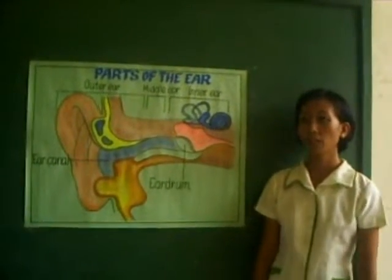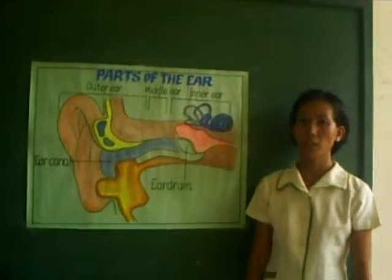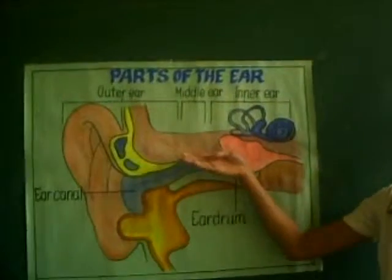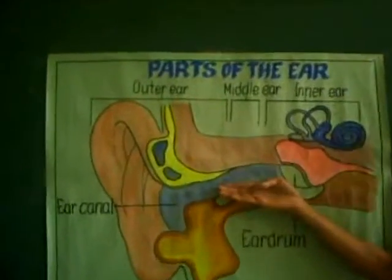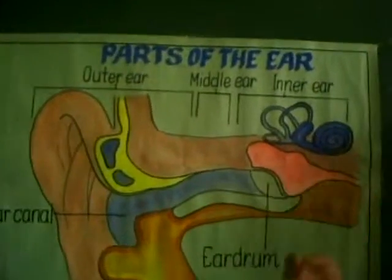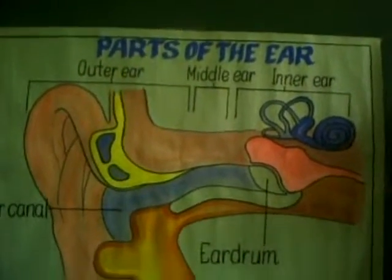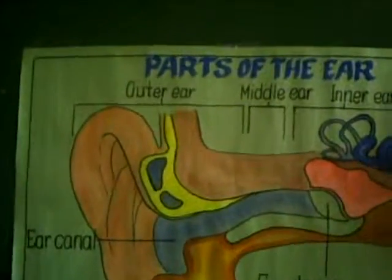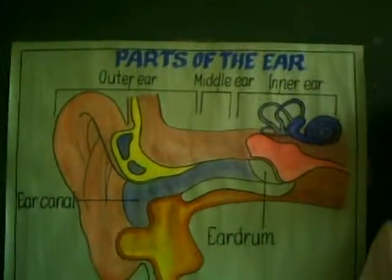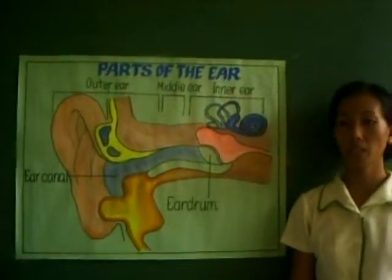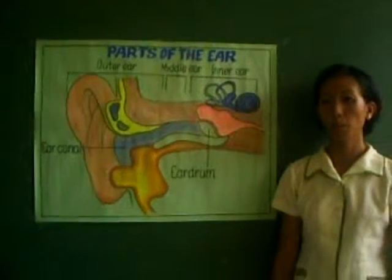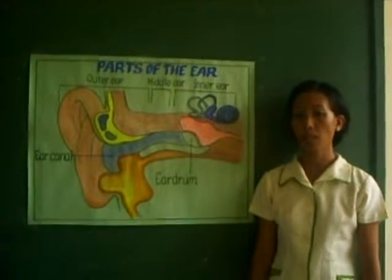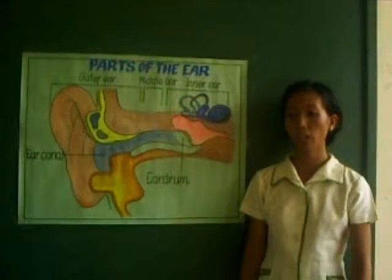The ear is divided into three major areas: the outer ear, the middle ear, and the inner ear. The outer ear is composed of the pinna and the external auditory canal. The pinna, or auricle, is what most people call the ear — the shell-shaped structure surrounding the auditory canal.